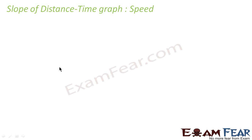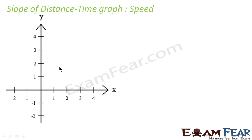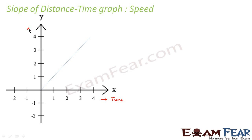Now let us see what we interpret from a distance-time graph. This is how a normal distance-time graph looks — it is a straight line. The slope of this straight line is nothing but speed. The x-axis is time and the y-axis represents distance.